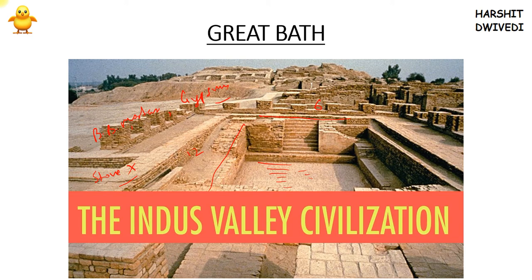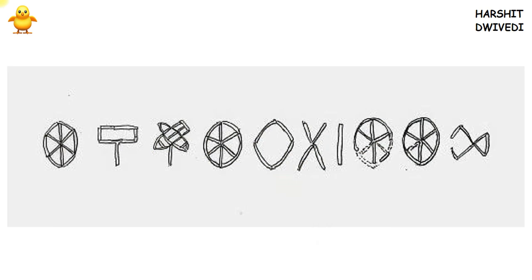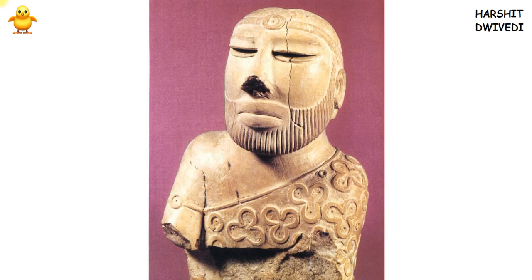A bronze dancing girl was found in Mohenjo-daro, showing that social entertainment activities were taking place. Also found was the supposed seal of Pashupati — also called the Proto-Shiva seal — which is very important and will be discussed later in the video.